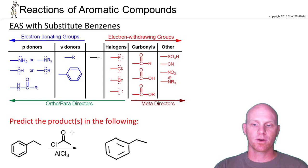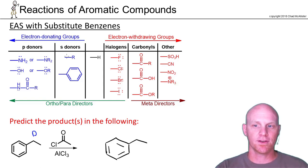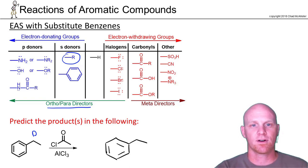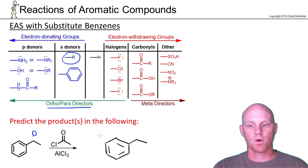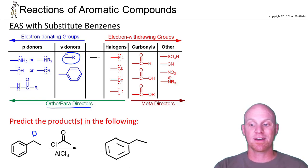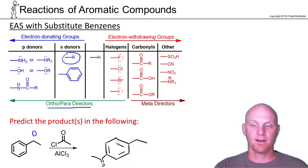In this next example, we're doing a Friedel-Crafts acylation with this combination of reagents. We've already got an ethyl group attached, and that ethyl group is a donating group, and therefore an ortho-para director. We could direct our new acyl group into either the ortho or para positions. One thing to note about Friedel-Crafts acylations is that due to bulkiness and sterics, they generally favor para over ortho, usually by a significant amount.